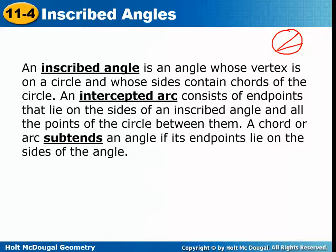Here is an example of an inscribed angle. The inscribed angle is the actual angle. The intercepted arc is this piece of the circle — the piece of the circumference — that the angle is holding onto. The endpoints are the sides of the inscribed angle, and the arc consists of all the points in between.